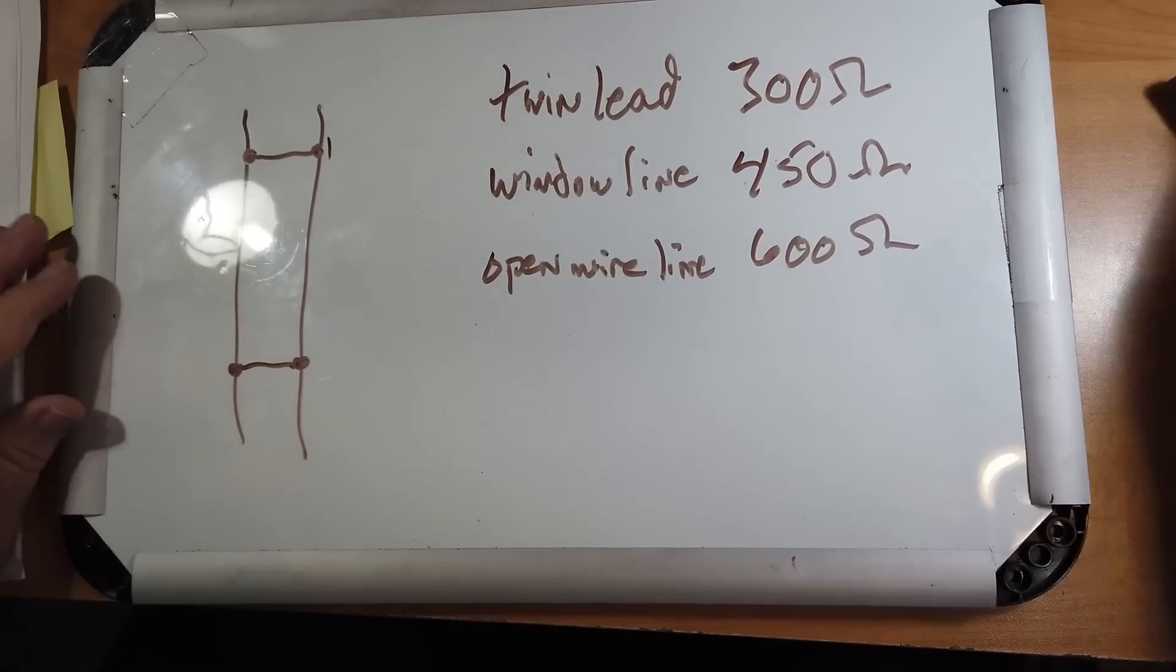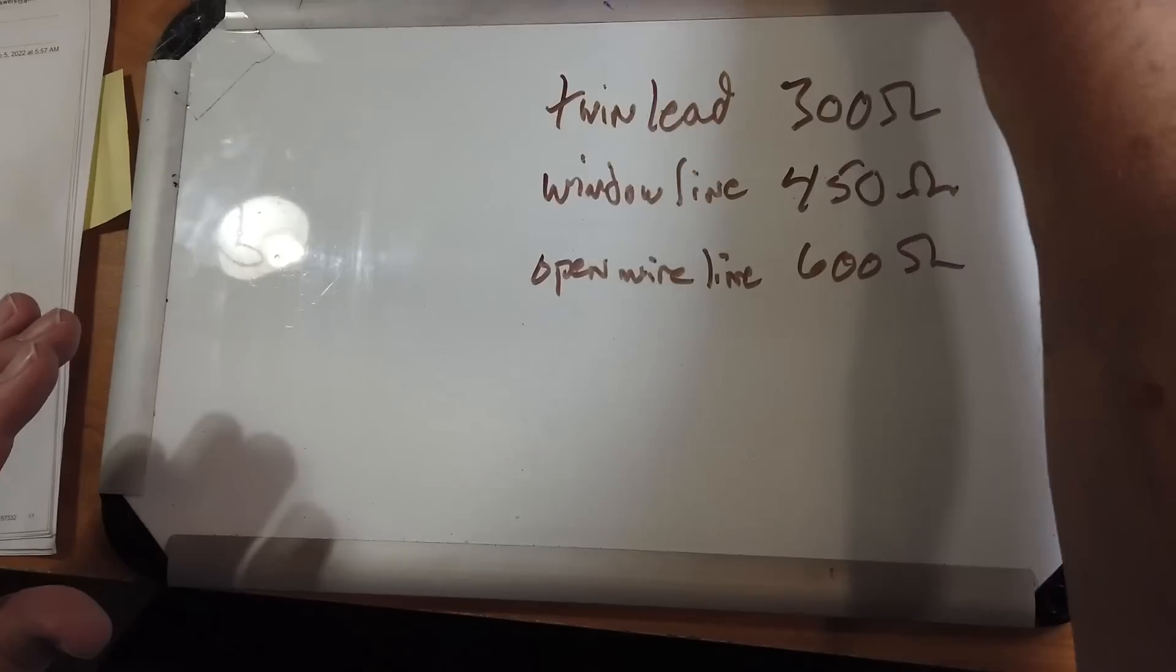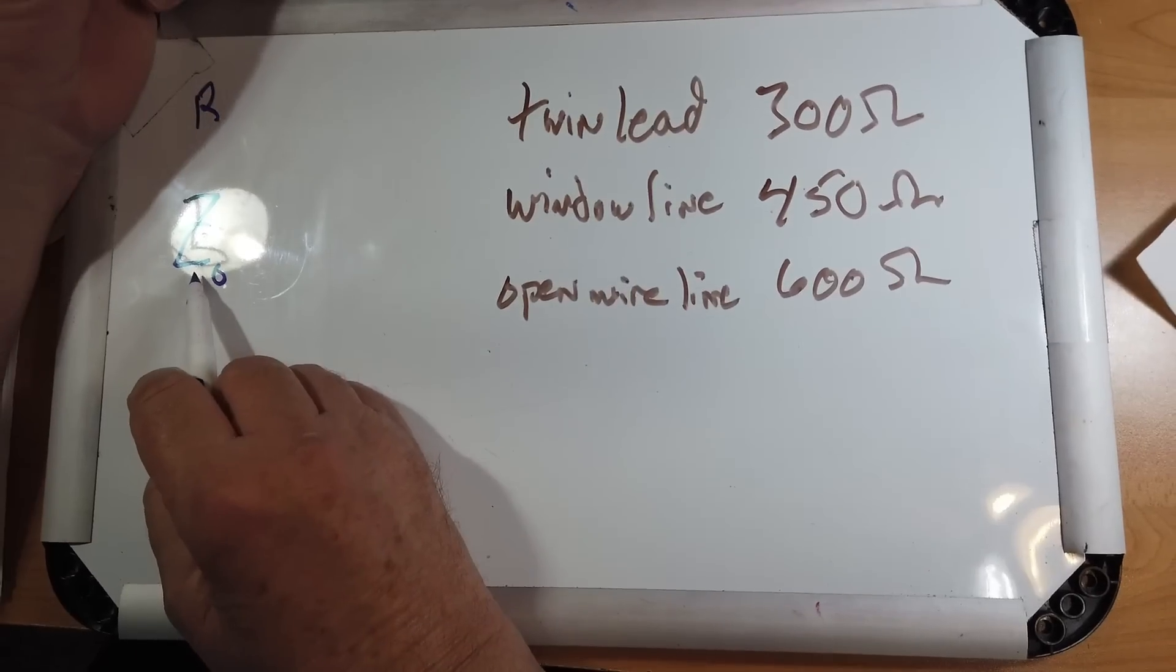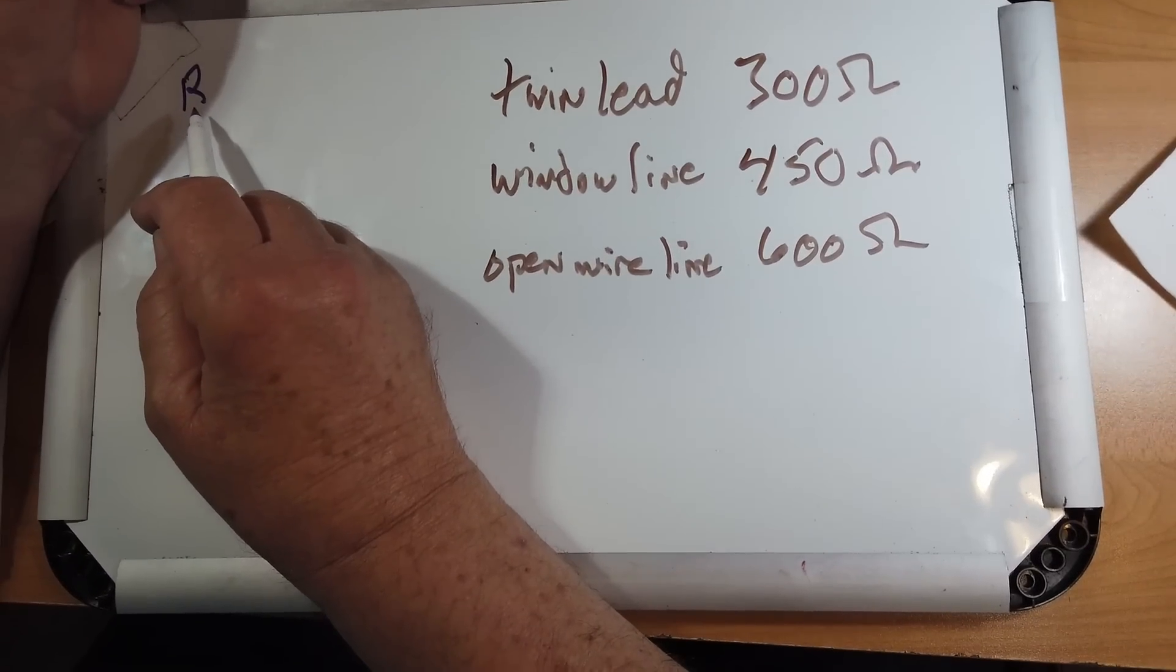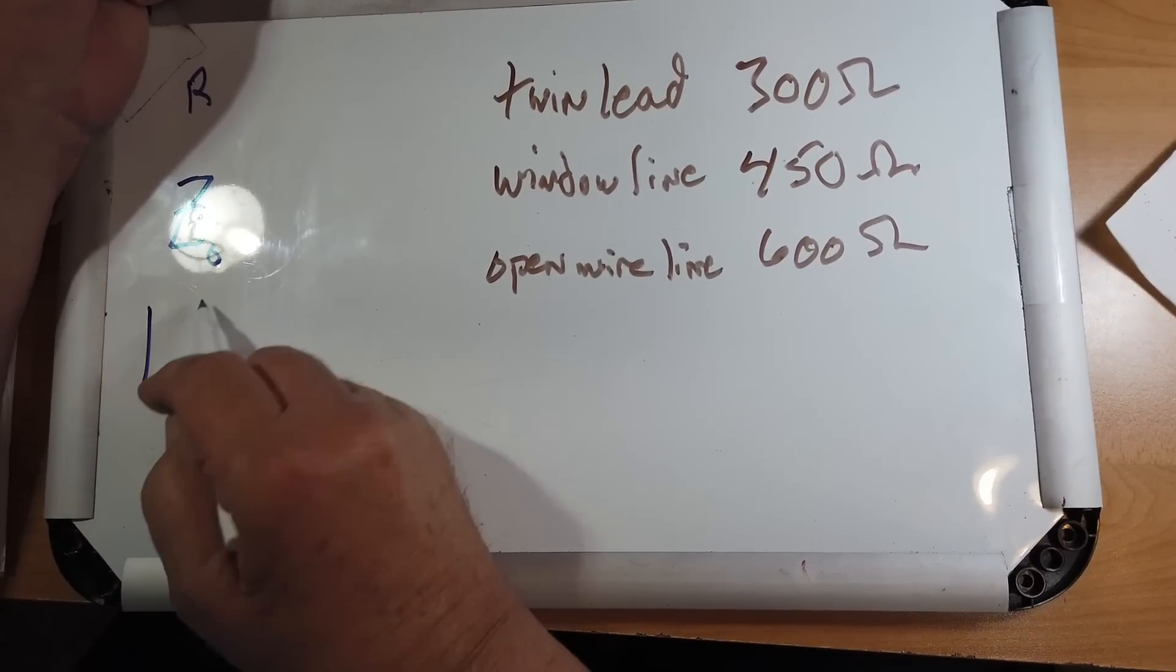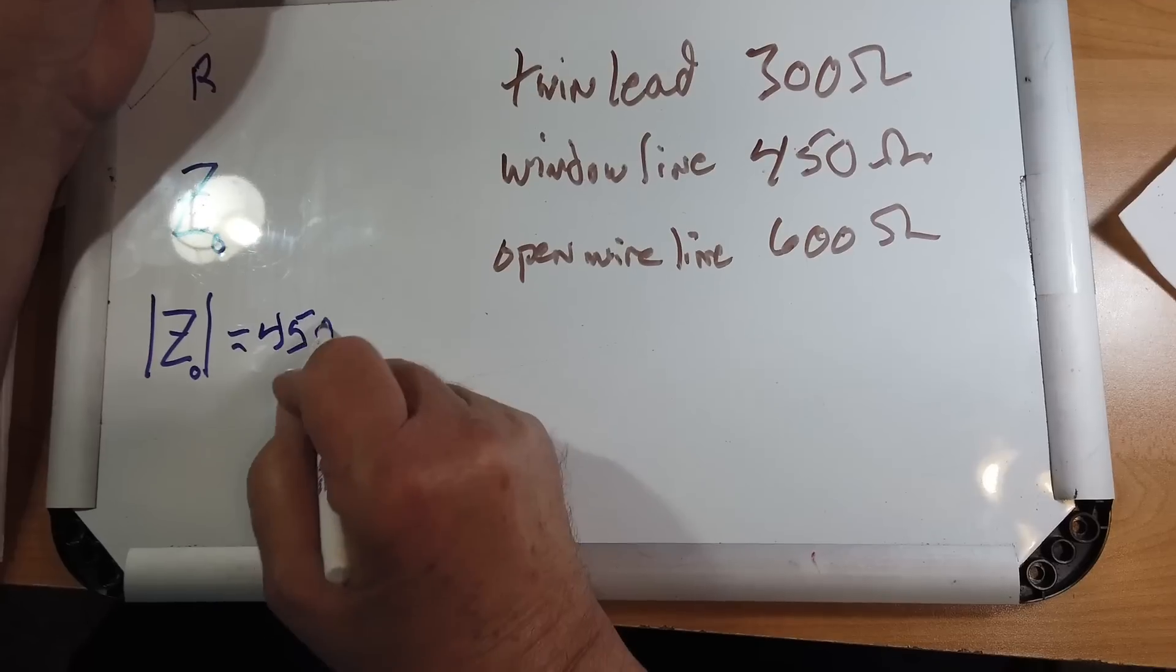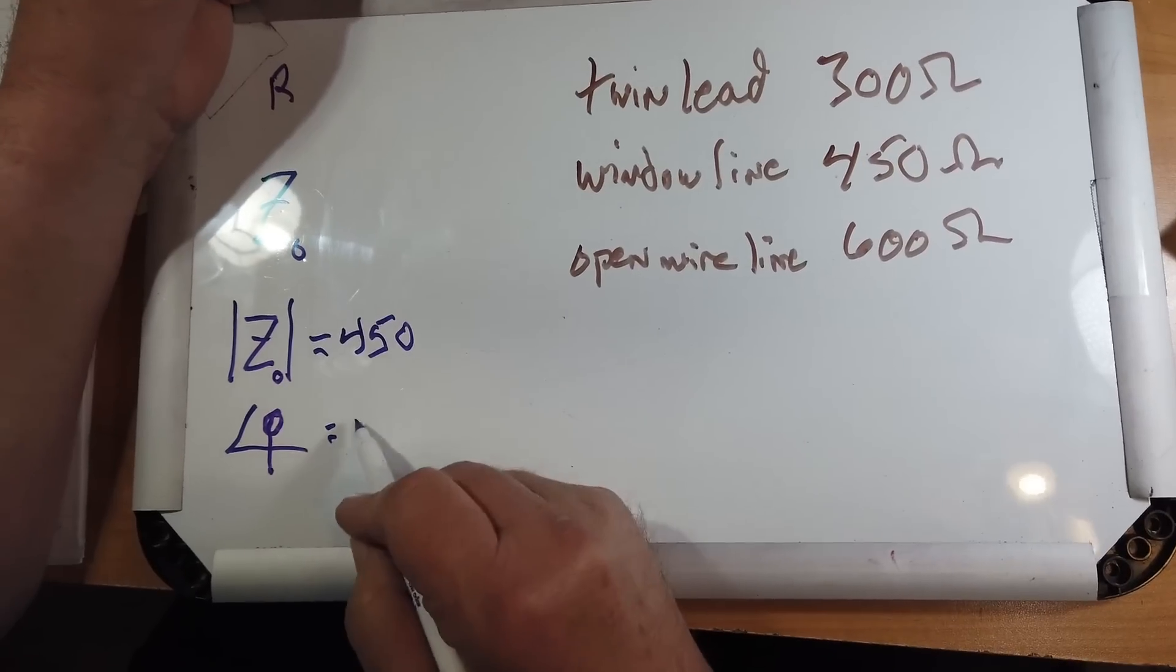Let's take a look at defining characteristic impedance. The characteristic impedance Z-naught - the impedance is usually given as the letter Z, and R is just for resistance in circuit theory. But this impedance can have both an amplitude, the absolute value of Z-naught, and this is what is usually given - let's say 450 ohms here.